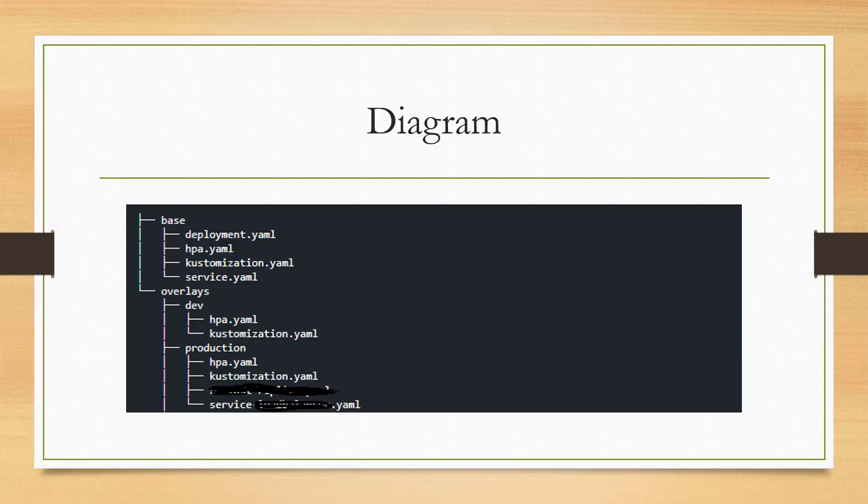The HPA.yaml file for prod will have a minimum replicas of 1, a max of 10, and average CPU of 70. This is a general structure of what the directory structure will look like for this question. I will walk you through creating the directory structure.